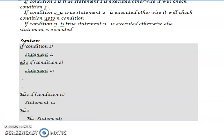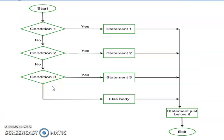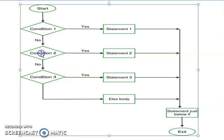Now let's look at the flowchart with three conditions. The program starts; if condition one is true, statement one is executed and control goes directly to the statement just below the if-else ladder, then the program exits. If condition one is false, we check condition two; if true, statement two executes. If condition two is false, condition three is checked. After all conditions, the else statement is executed.